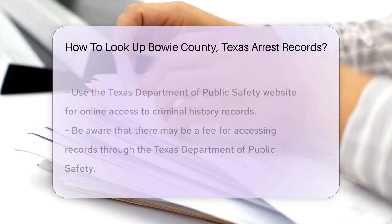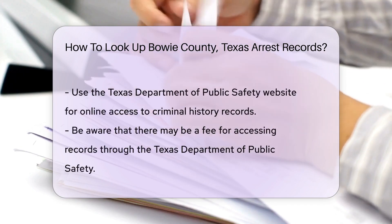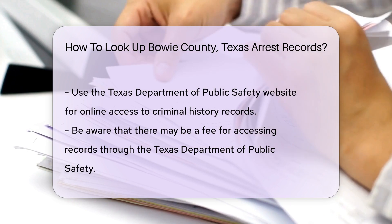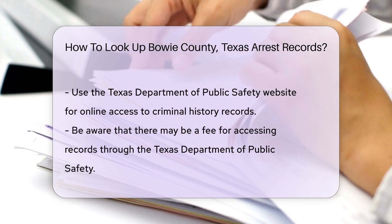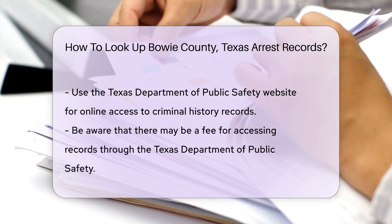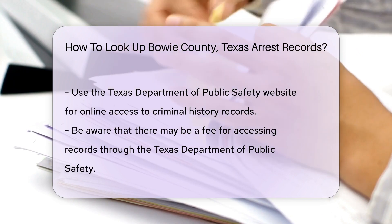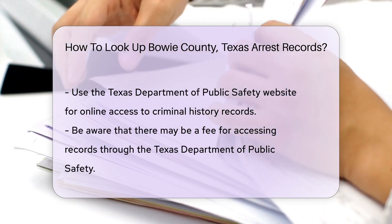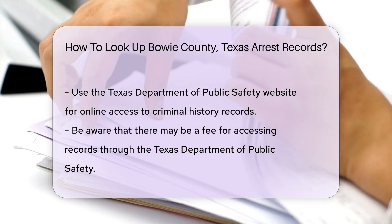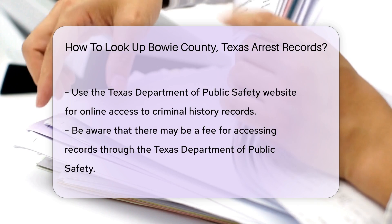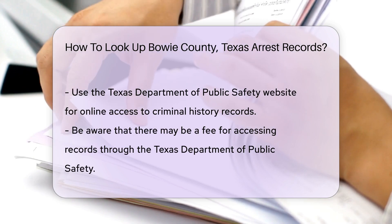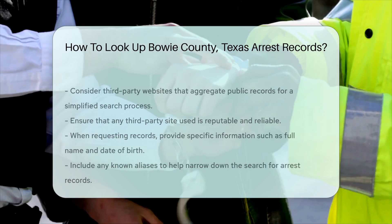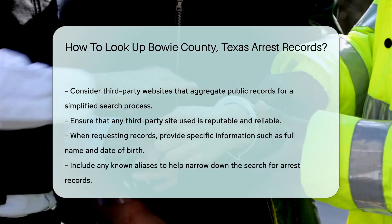If you prefer online access, check out the Texas Department of Public Safety website. They maintain a database of criminal history records. There may be a fee for this service, so be prepared for that. Additionally, consider using third-party websites that aggregate public records — these sites can simplify the search process, but ensure they are reputable and reliable.